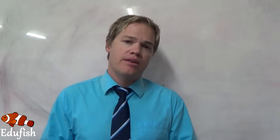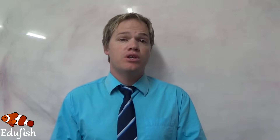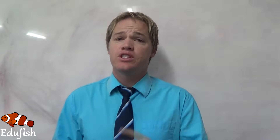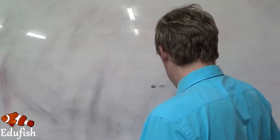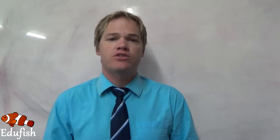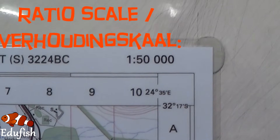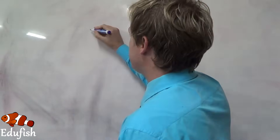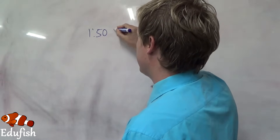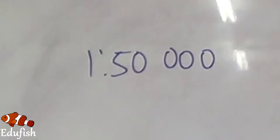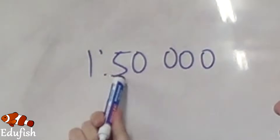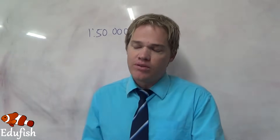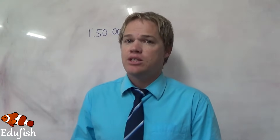In the previous episode we explained the ratio scale, and today we are going to show you how to use this ratio scale in order to calculate distance — the real distance. Let's quickly recap. We were using a ratio scale of 1 to 50,000. We said that 1 cm on the map represents 50,000 cm in real life.